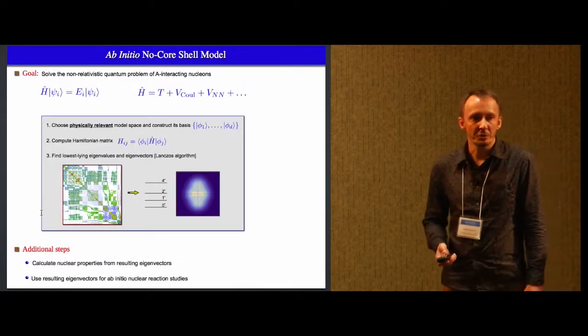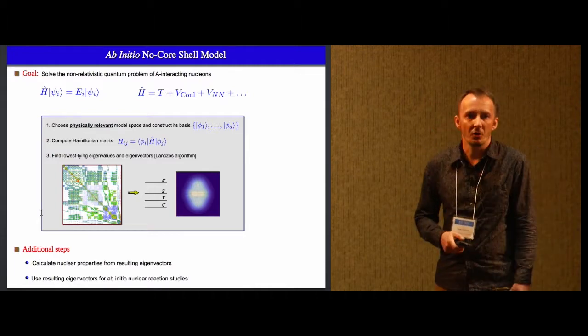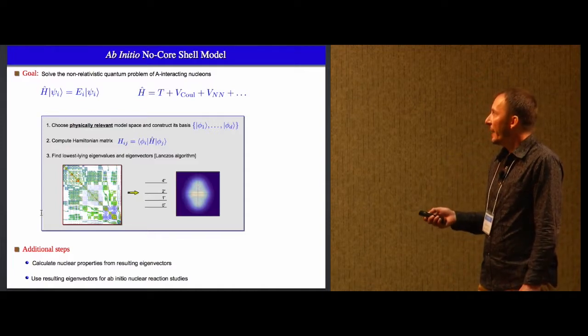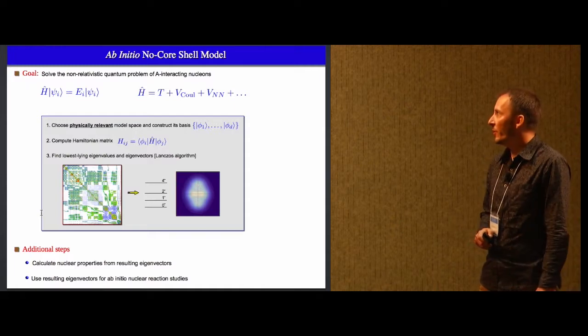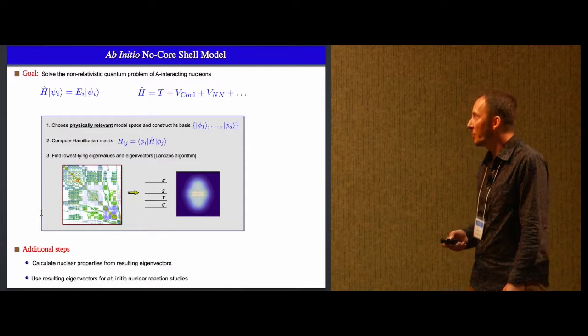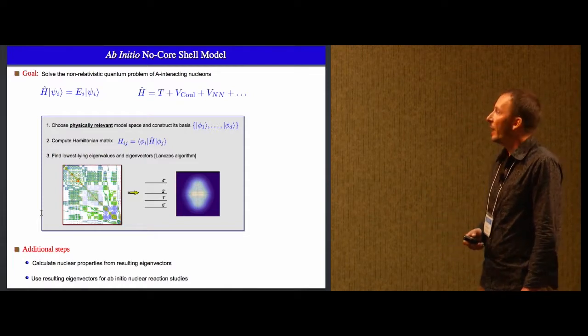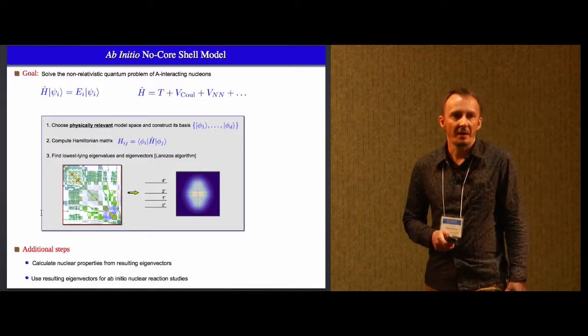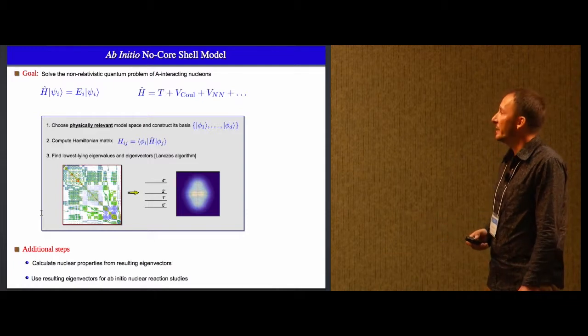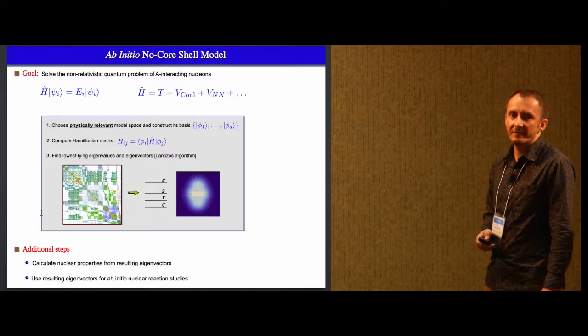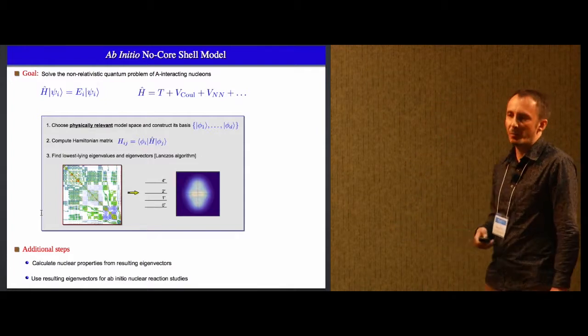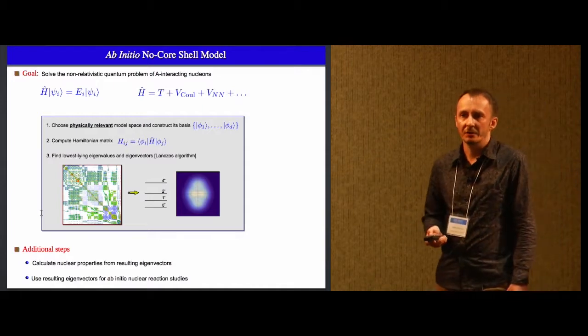And so here is the approach which we are using. It's called ab-initio no-core-shell model. It is a configuration interaction approach where you solve non-relativistic Schrodinger equation for interacting nucleons. And the workflow is made up of three steps. First of all, you choose your physically relevant model space and basis that spans the model space. In the second step, you just compute matrix elements of the Hamiltonian. So at the end, you're going to get some sparse large matrix. And in the last step, you apply Lanczos algorithm to find few lowest-lying eigenstates and eigenvalues. The eigenvalues correspond to energy levels in the nuclei and associated eigenvectors represent the wave function of the nuclei, which is then what you use in additional step where you take those wave functions and you can calculate nuclear properties that can be compared to experiment. And also you can use them for nuclear reaction studies.